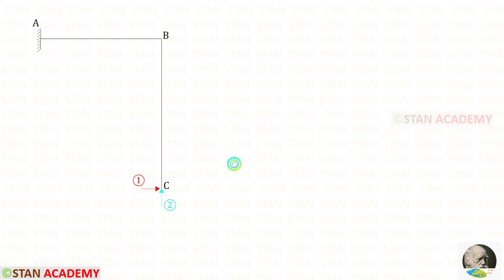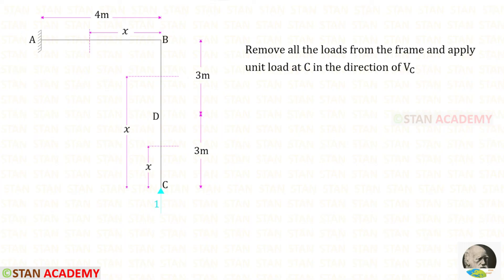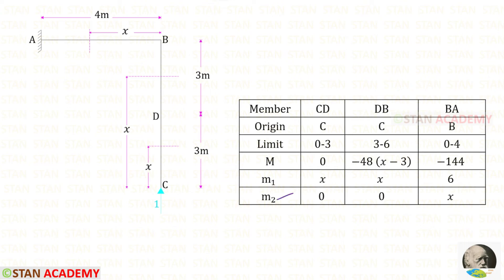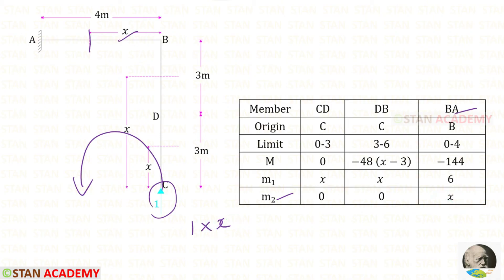Now we are going to find the moment M2. We apply a unit load in the direction of VC, our second coordinate. For M2 in CED and DB, up to those sections we have only the unit load, but there is no perpendicular distance for this load, so the moment is 0. For M2 in BA, up to the section the unit load acts in the anticlockwise direction, so it is positive and the distance is x, giving M2 = 1 × x = x.